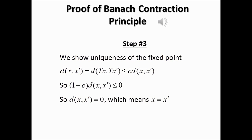Now we show the fixed point is unique. Suppose X' is any other fixed point of T. Then the distance between T(X) and T(X') equals the distance between X and X', because T(X') = X' and T(X) = X. Because T is a contraction, the distance between T(X) and T(X') is less than or equal to C times the distance between X and X'.